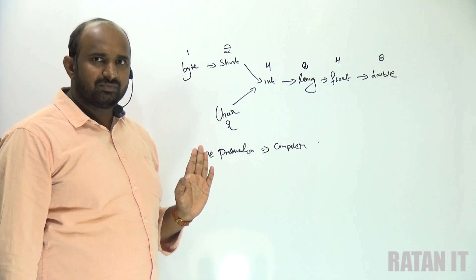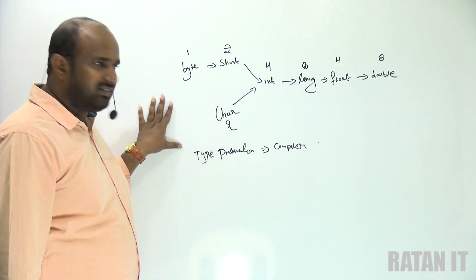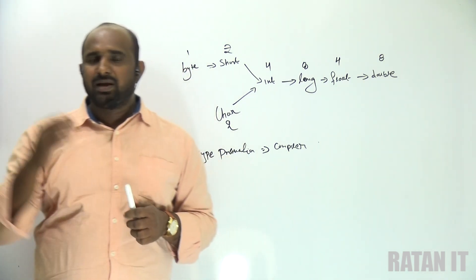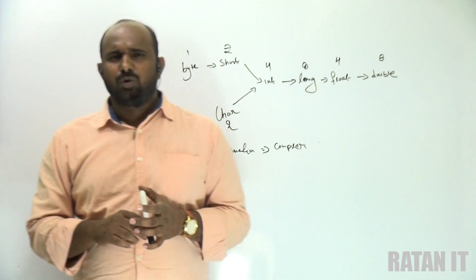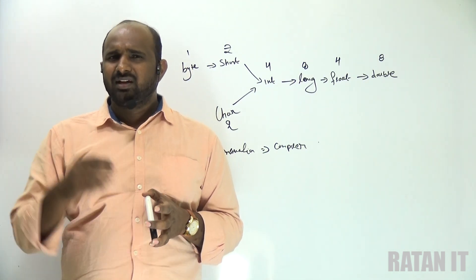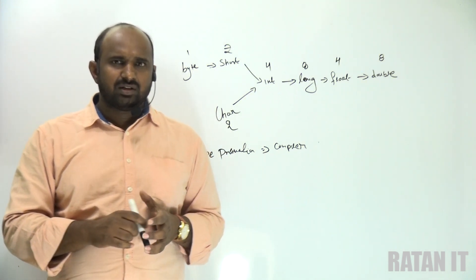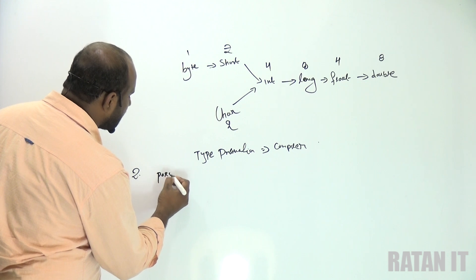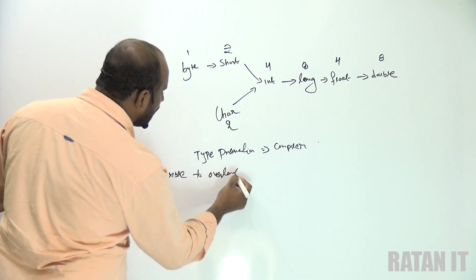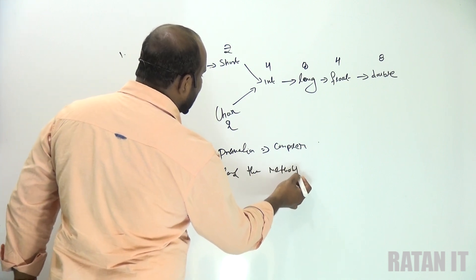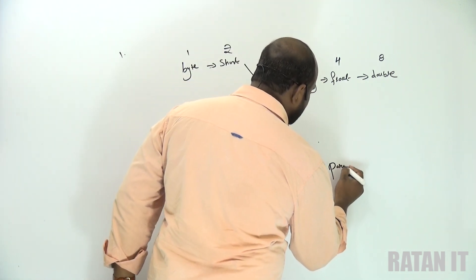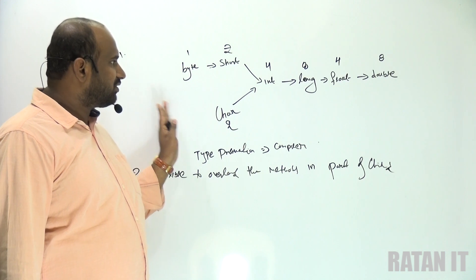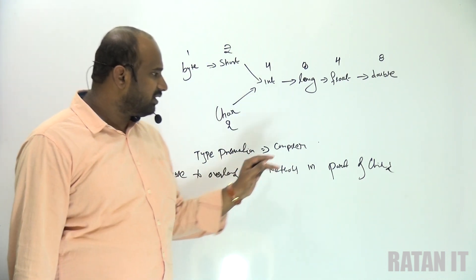I will do this example practically. The first example covers type promotion — always done from left to right. The second example shows that it is possible to overload methods in a parent and child relationship as well.